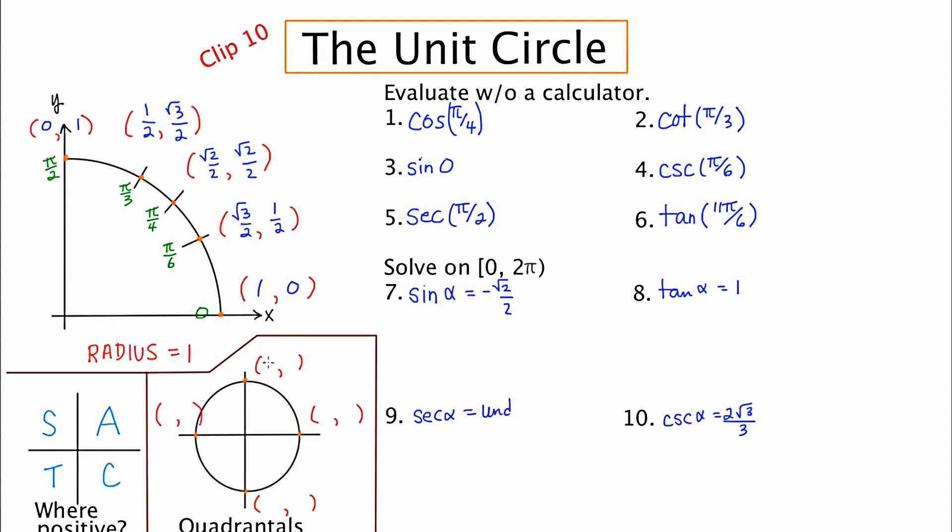The quadrantal angles are a special set of angles that terminate along an axis. So this is one, zero, this is zero, one, this is negative one, zero, and this is zero, negative one. And these are sort of in a category unto themselves because you can't take a point, one of these orange points, and drop an altitude and get a right triangle. So much of trigonometry is based on a right triangle, and these are some cases where you really can't do that. So that's why they're called quadrantals and you treat them just a little bit differently.